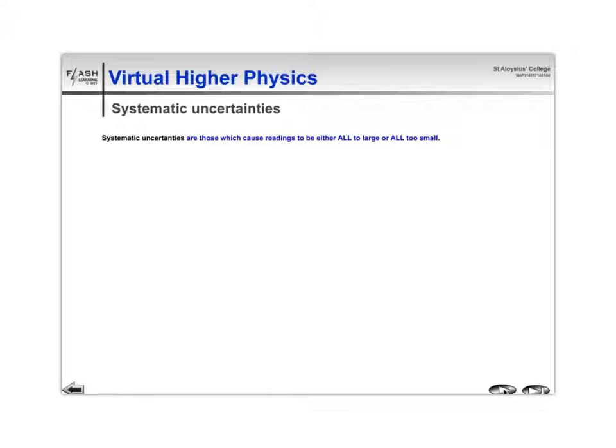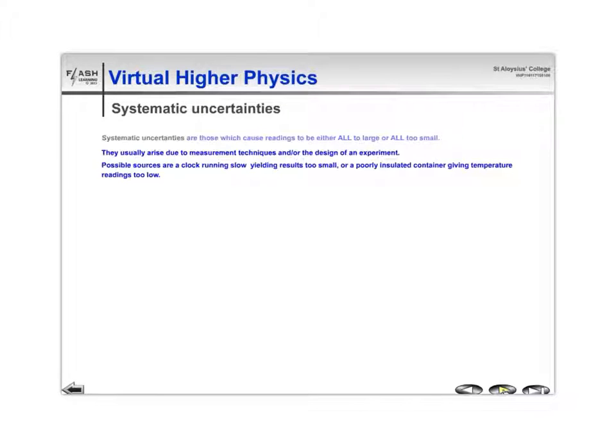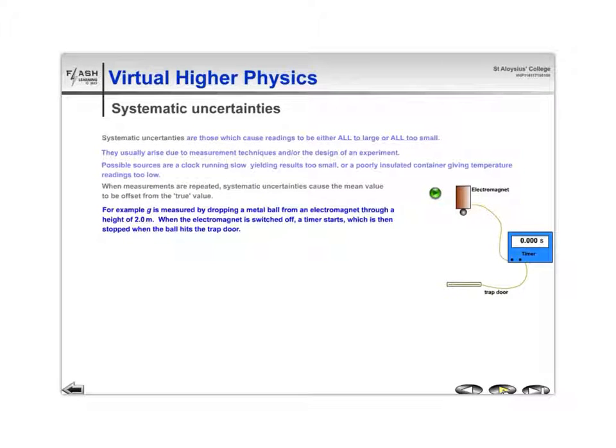Systematic uncertainties are uncertainties which you should really eliminate from an experiment. They're usually due to faulty technique or faulty equipment. For instance, a clock running slow, or a poorly insulated container giving temperature readings.